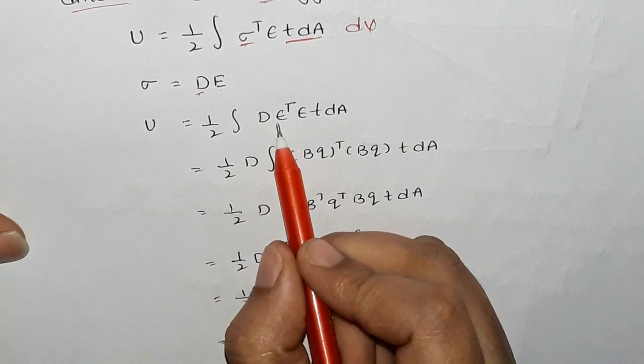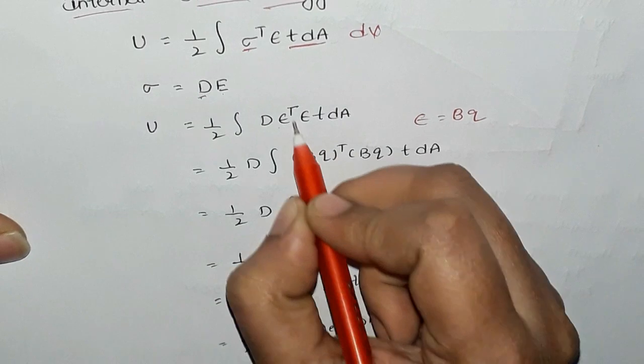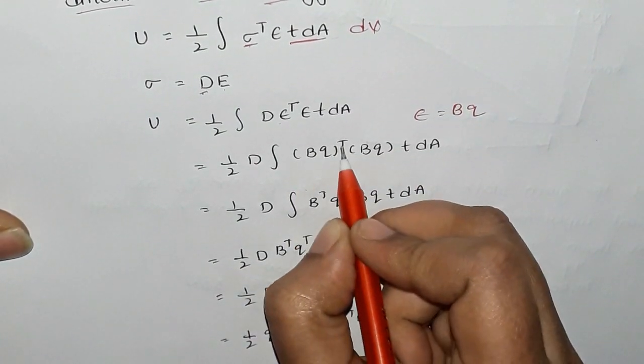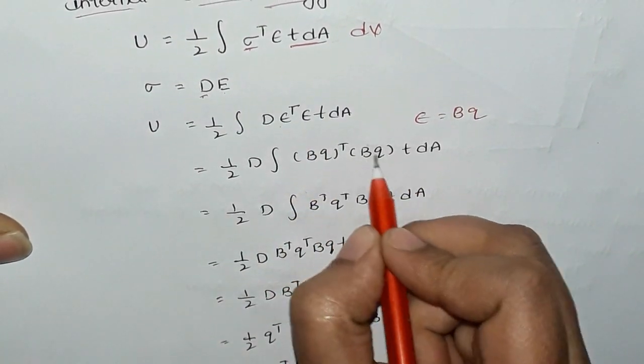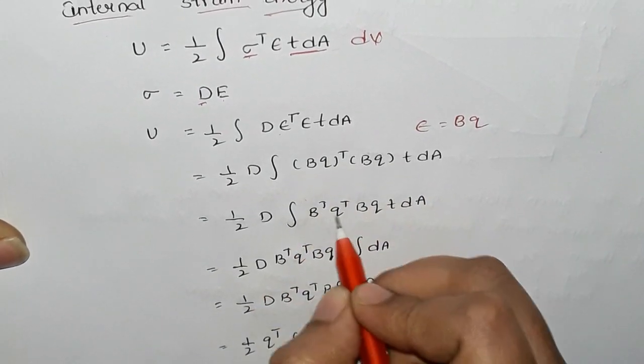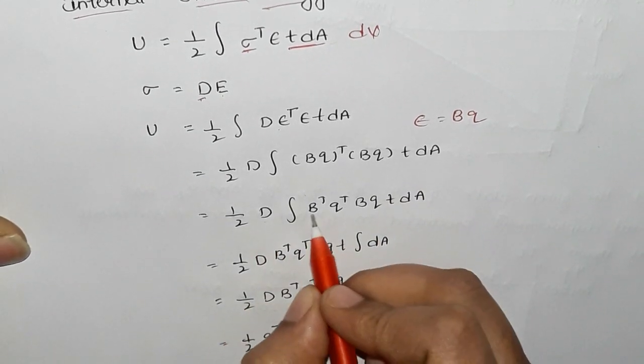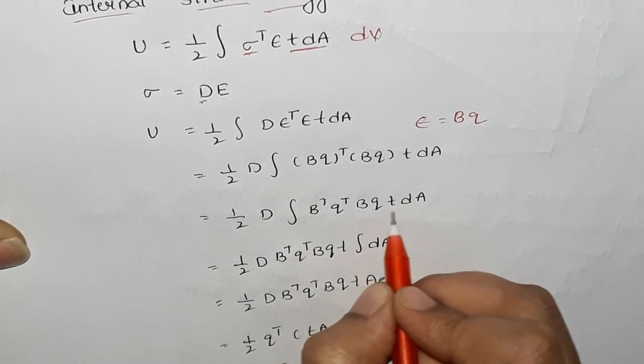What do we do? We already have epsilon as strain BQ. So here we have BQ transpose and BQ TDA. Now, split up is B transpose Q transpose BQ TDA. We have D B transpose Q transpose BQ T.